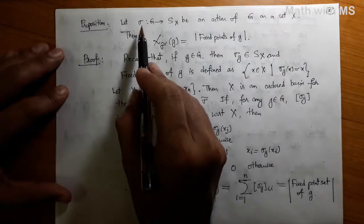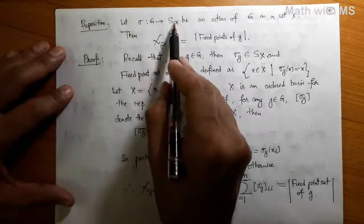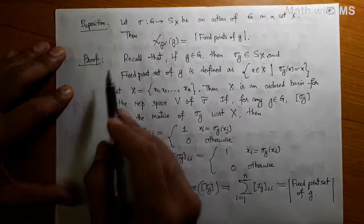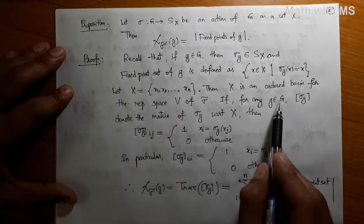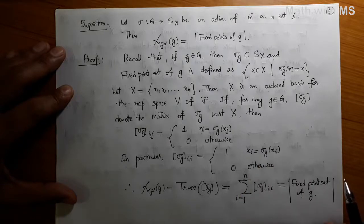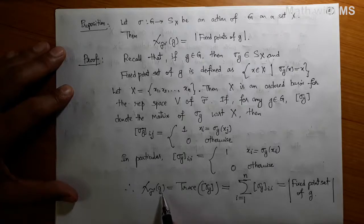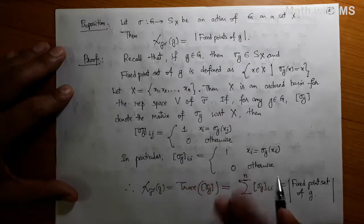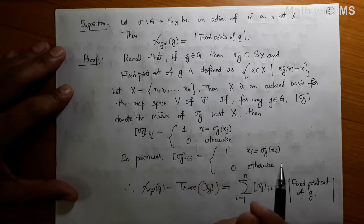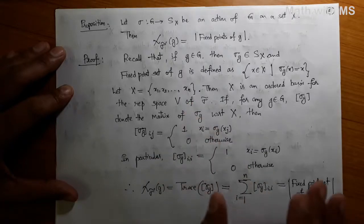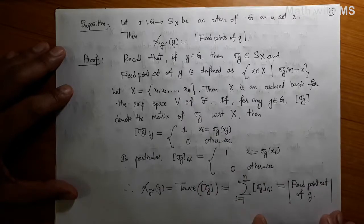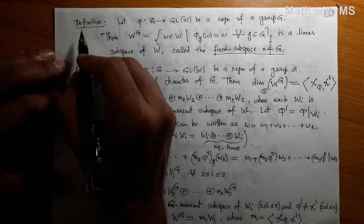Notice that if we take the action of the group G on itself by left multiplication, then for any non-trivial element G of the group G, there are no fixed points. Therefore, the character of the regular representation at a non-trivial element is zero. At the trivial element, it is precisely the degree of the representation N. So you get back the earlier result for the regular representation of a group.